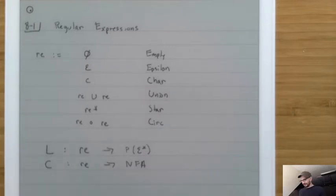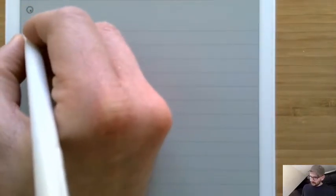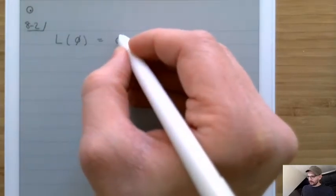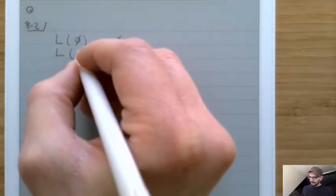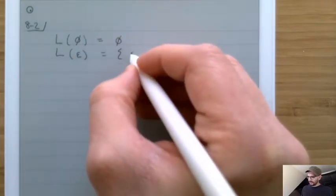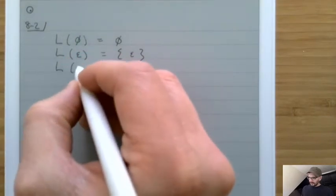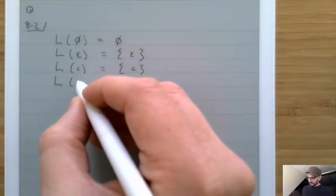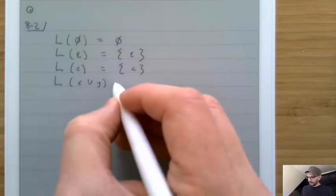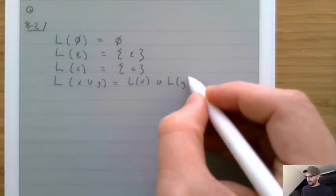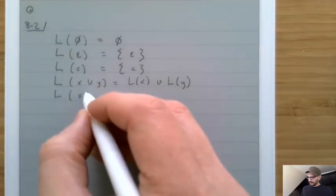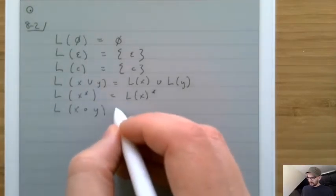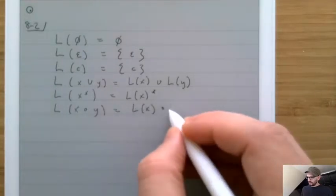Let's look at those functions one at a time. First, the L function. L of epsilon is equal to {epsilon}. L of C is equal to the set that just contains that character. L of X union Y is equal to L(X) union L(Y). L of X star is equal to L(X) star, and L of X circ Y is equal to L(X) circ L(Y).